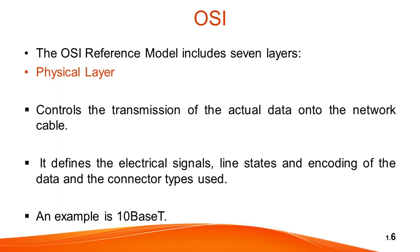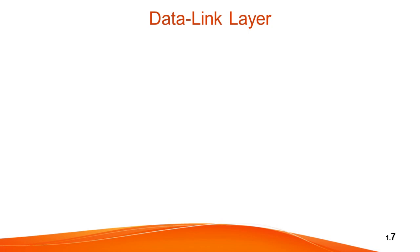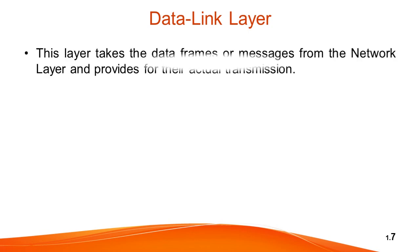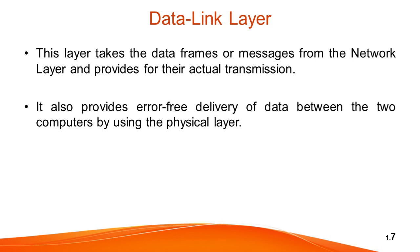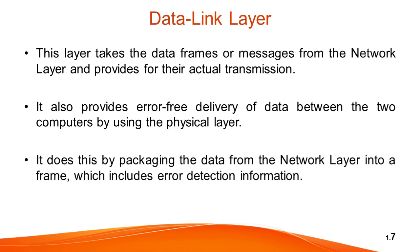After the Physical layer, there is the Data Link layer. This layer takes the data frames or messages from the network layer and provides for their actual transmission. At the receiver computer, this layer receives the incoming data and sends it to the network layer for handling. This layer also provides error-free delivery of data between two computers by using the Physical layer. It does this by packaging the data from the network layer into a frame which includes error detection information.